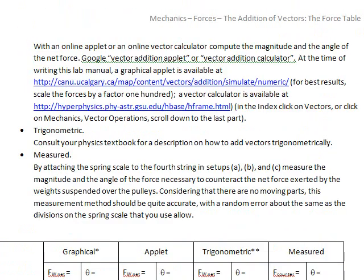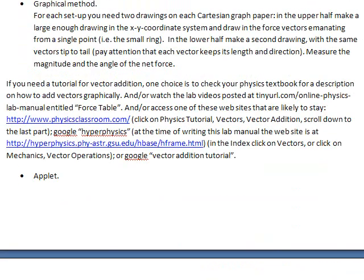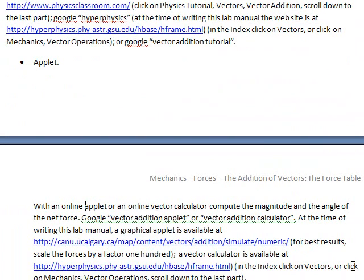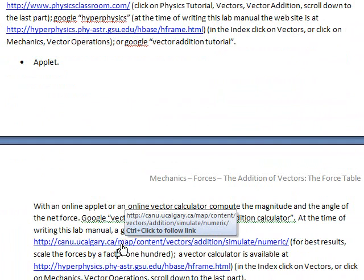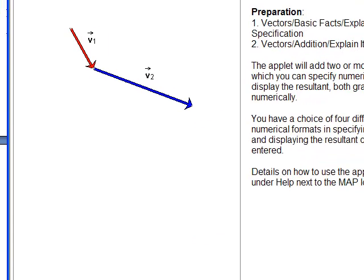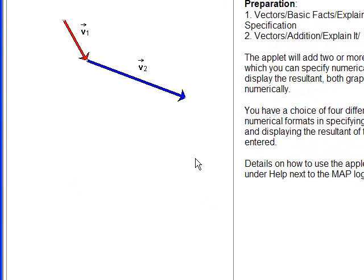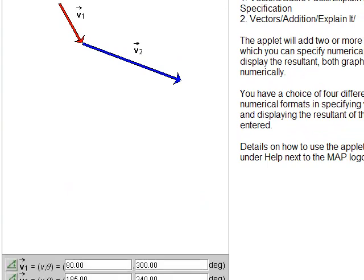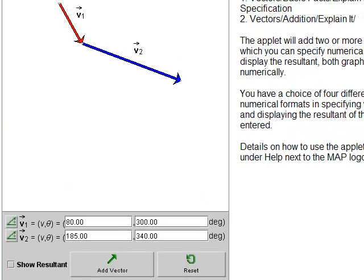Okay, the second method says the applet, an online applet or an online vector calculator, compute the magnitude and the angle of the net force. Google vector addition applets and so on. So we go to this one here and I'm just going to do this one and pull it up. So there it is and that actually does the work for us. It will put all the vectors tip to tail.